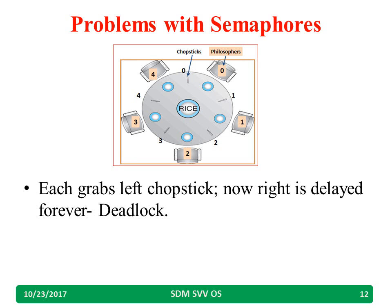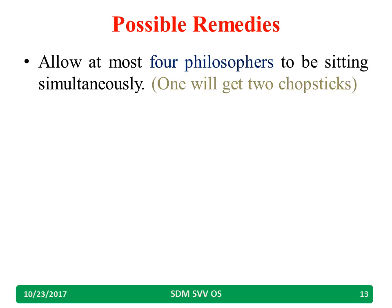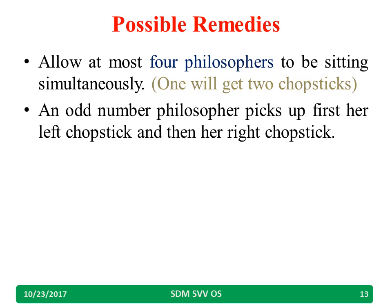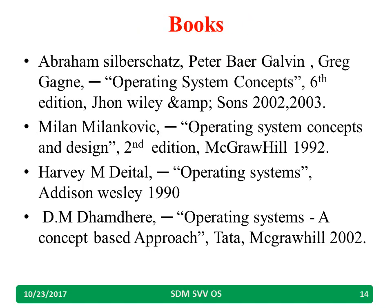Several possible remedies exist. First, allow at most four philosophers to sit at the table — automatically one philosopher will get two chopsticks and there is no deadlock. Second, odd-numbered philosophers should pick their left chopstick first; this avoids deadlock. Third, even-numbered philosophers should pick their right chopstick first, then left. Applying these strategies eliminates the chance of deadlock.